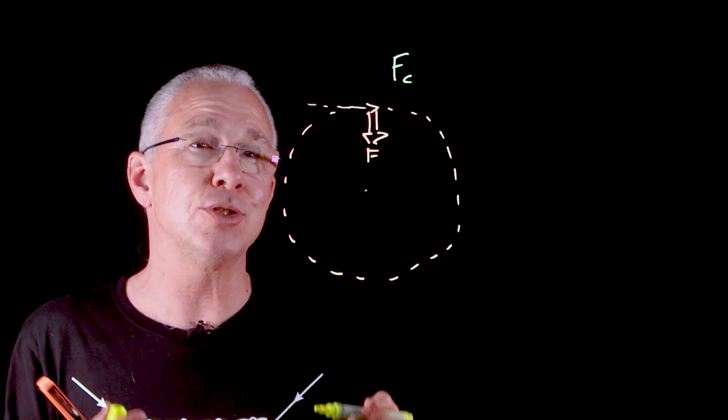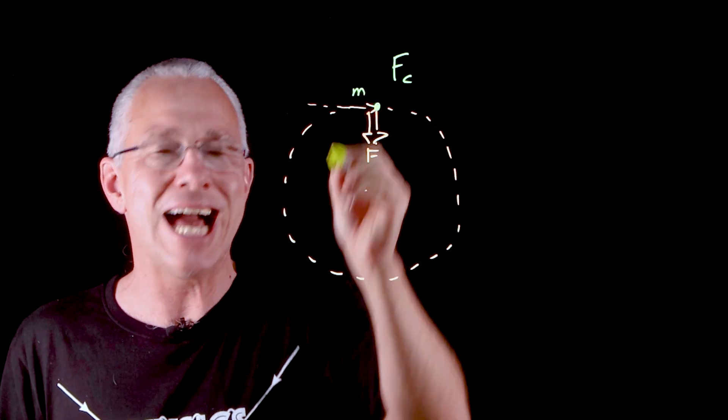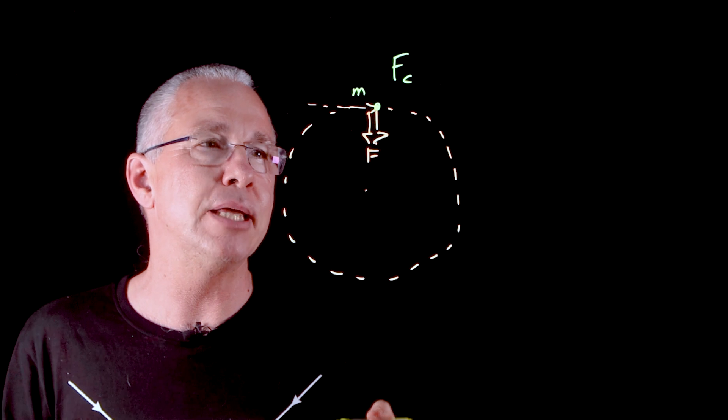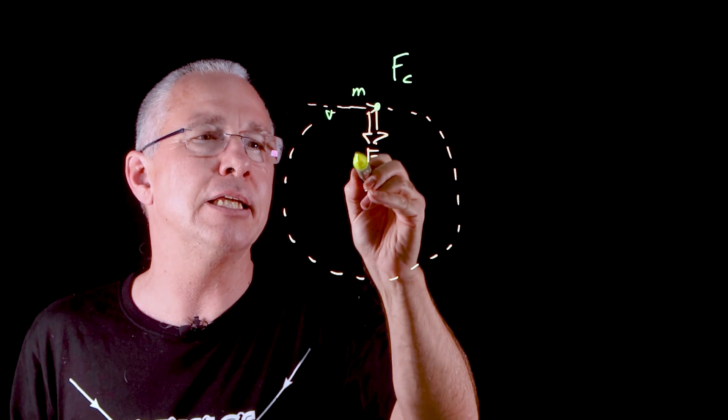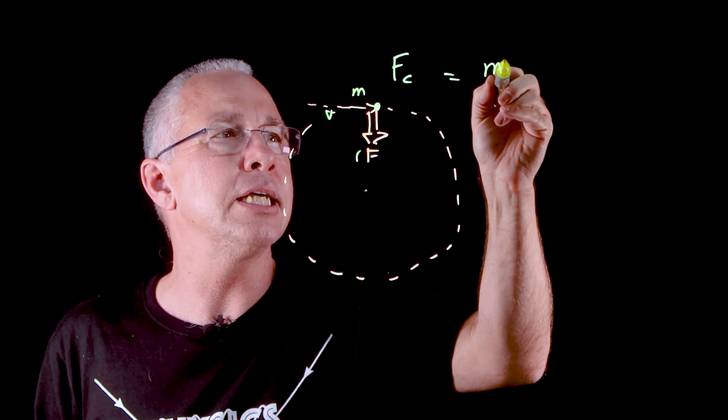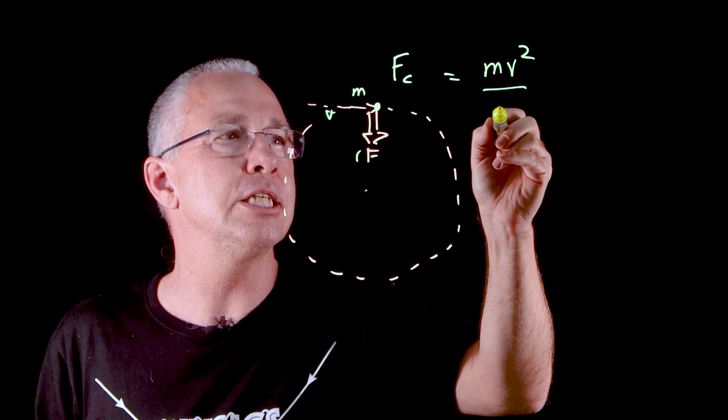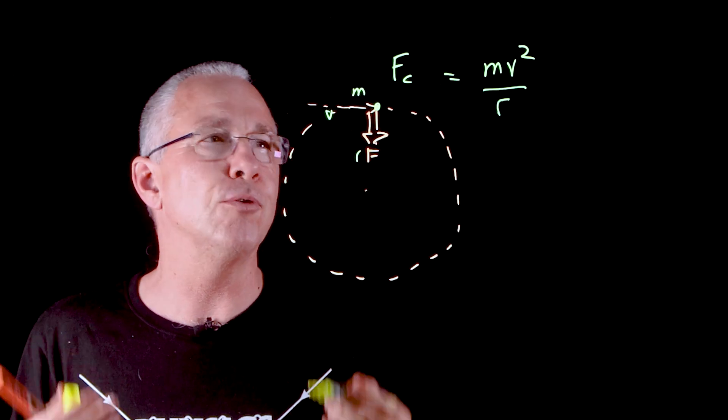Now what does that centripetal force depend on? It depends on the mass that the object has, the velocity that the particle has, and the radius. So you end up getting that the centripetal force is equal to the mass times the velocity squared divided by R. That's our centripetal force formula.